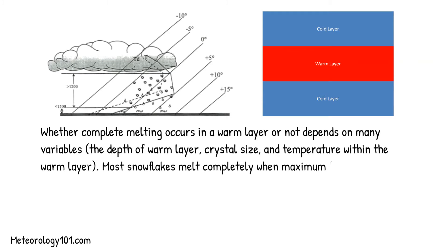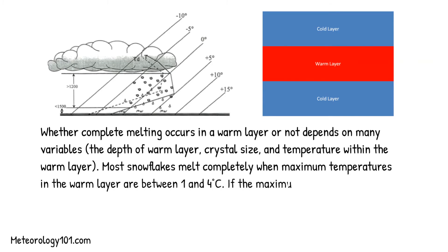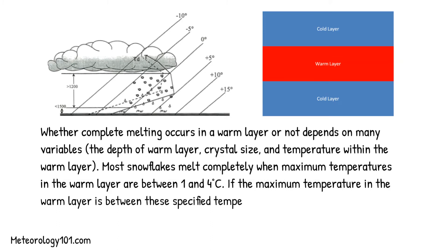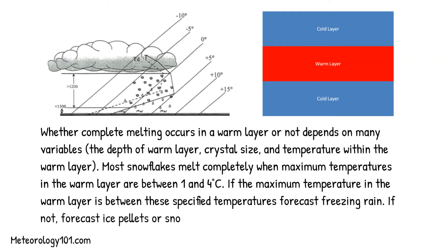Most snowflakes melt completely when maximum temperatures in the warm layer are between 1 and 4 degrees Celsius. If the maximum temperature in the warm layer is between these specified temperatures, forecast freezing rain. If not, forecast ice pellets or snow.